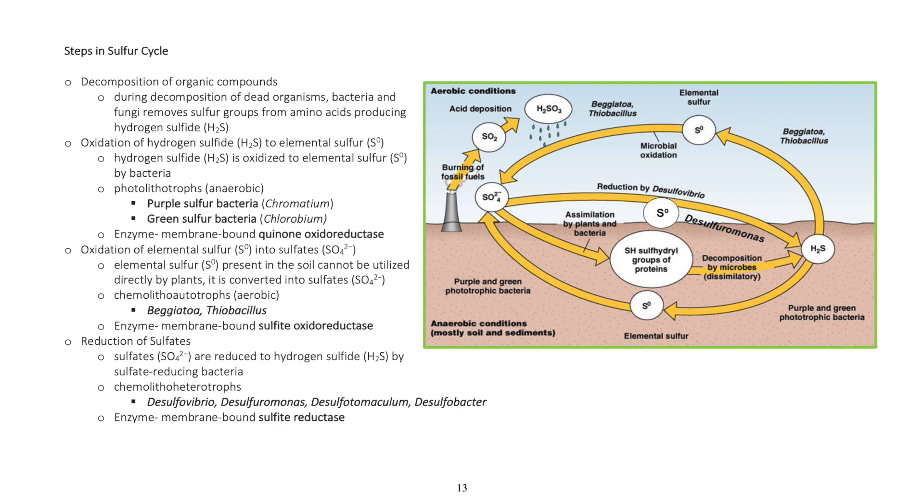Oxidation of hydrogen sulfide to elemental sulfur. Hydrogen sulfide is oxidized to elemental sulfur by bacteria. Photolithotrophs, anaerobic: Purple sulfur bacteria (Chromaceum), Green sulfur bacteria (Chlorobium). Enzyme: membrane bound quinone oxyoreductase.